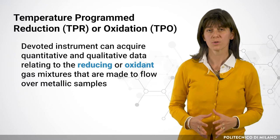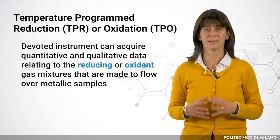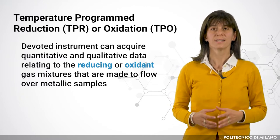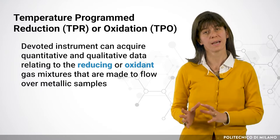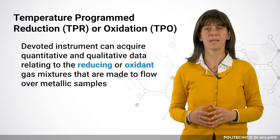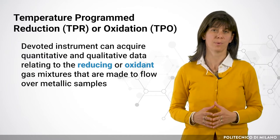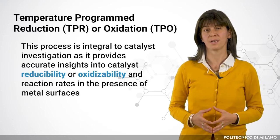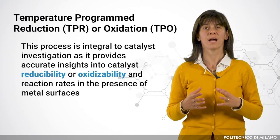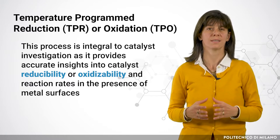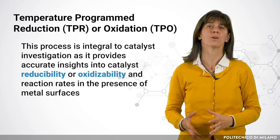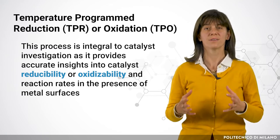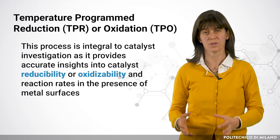Dedicated instruments can acquire qualitative and quantitative data relating to the reducing or oxidant gas mixture that is made to flow over the metallic samples. This process is integral to catalyst investigation as it provides accurate insights into catalyst reducibility or oxidability and reaction rates in the presence of metal surfaces. The second technique is chemisorption.